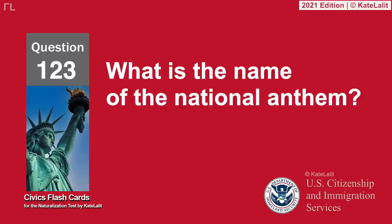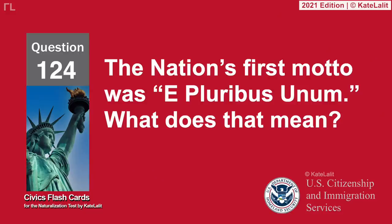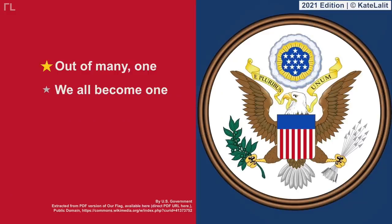What is the name of the national anthem? The Star-Spangled Banner. The nation's first motto was E Pluribus Unum — what does that mean? Out of many, one. We all become one.